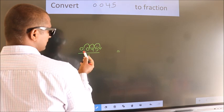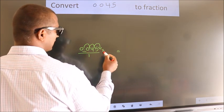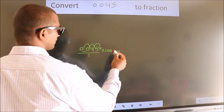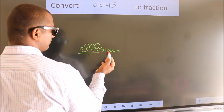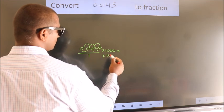To move this decimal after 3 numbers, we should multiply it with 1000. Whatever we are doing in the numerator, in the denominator also we should do the same.